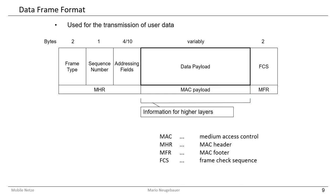Here you can see the data frame format, which transports user data from one participant to another. The structure is almost the same: a MAC header, a MAC payload, and a MAC footer. In the MAC payload area there is only data to transmit — no management information about super frame order or beacon order, but only payload that informs about the application data connected in upper layers.